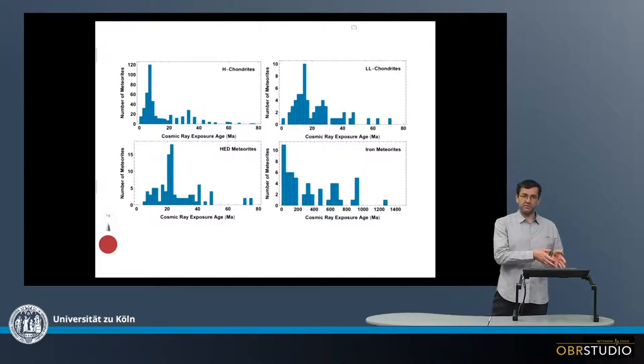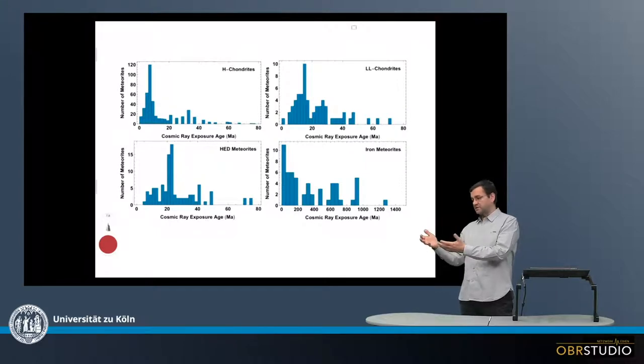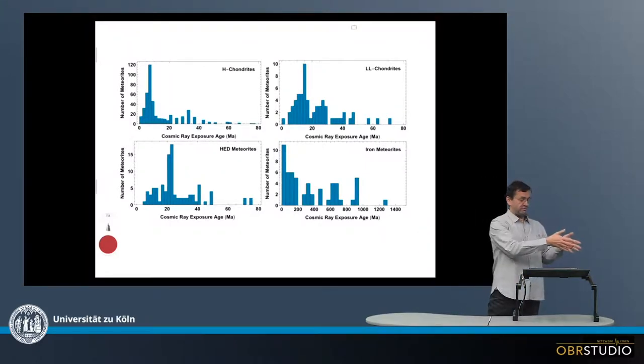Before a meteorite lands on Earth, it travels from its source planetary body, typically an asteroid, but maybe also Mars or the Moon, through space to Earth.